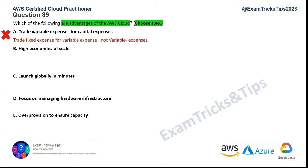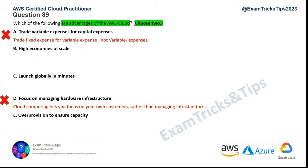Option D — focus on managing hardware infrastructure — is wrong because the biggest advantage of cloud is that you don't have to worry about managing hardware infrastructure; AWS does it for you. Option E — over-provision to ensure capacity — is also wrong. In the cloud, you don't have to over-provision because you have the elasticity of cloud. You don't need to guess capacity needs; for example, during Black Friday or Christmas sales, as long as you have auto scaling on, AWS will manage it for you.